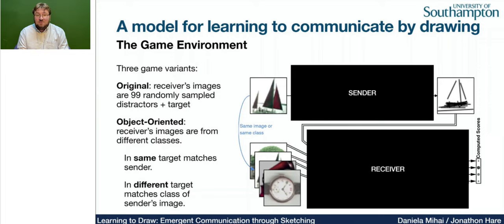In the third variant, the object-oriented different game, the receiver will have an image of the same class as the sender, but not the same image itself — so it would be a different picture of a boat.